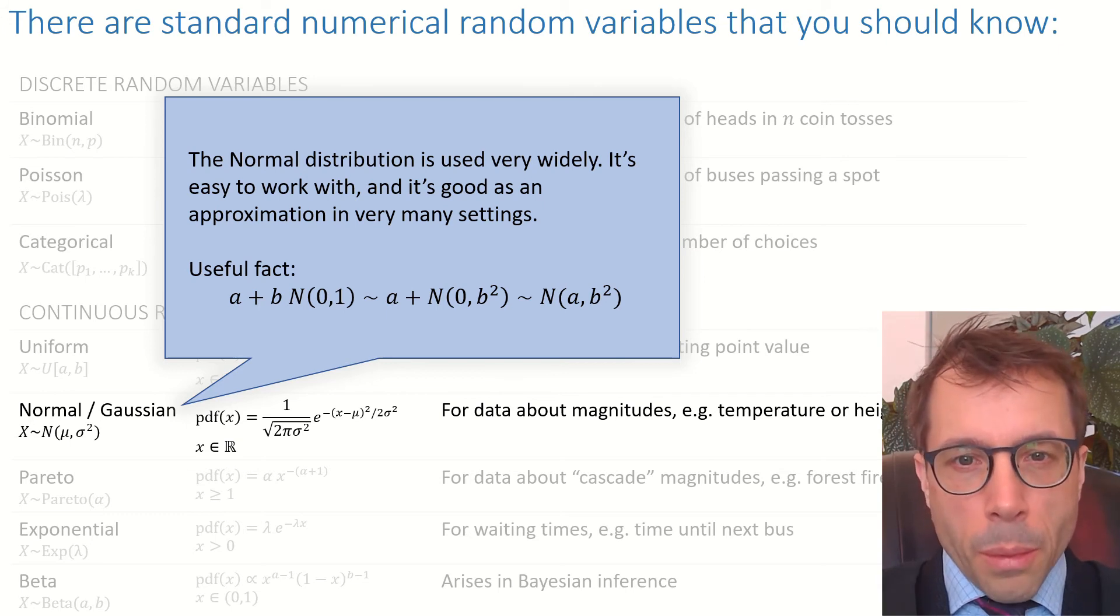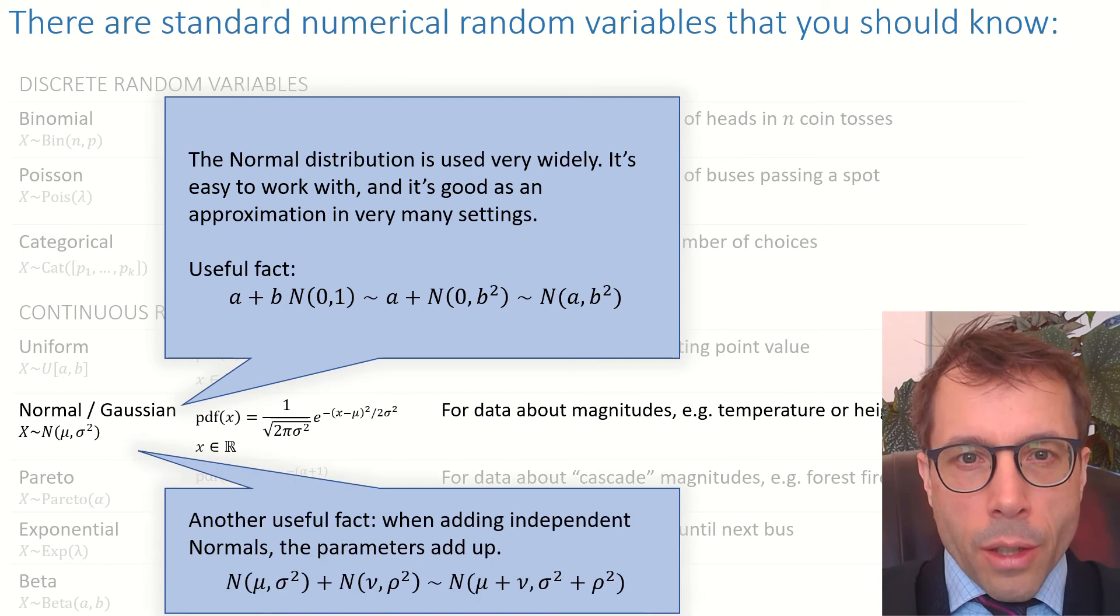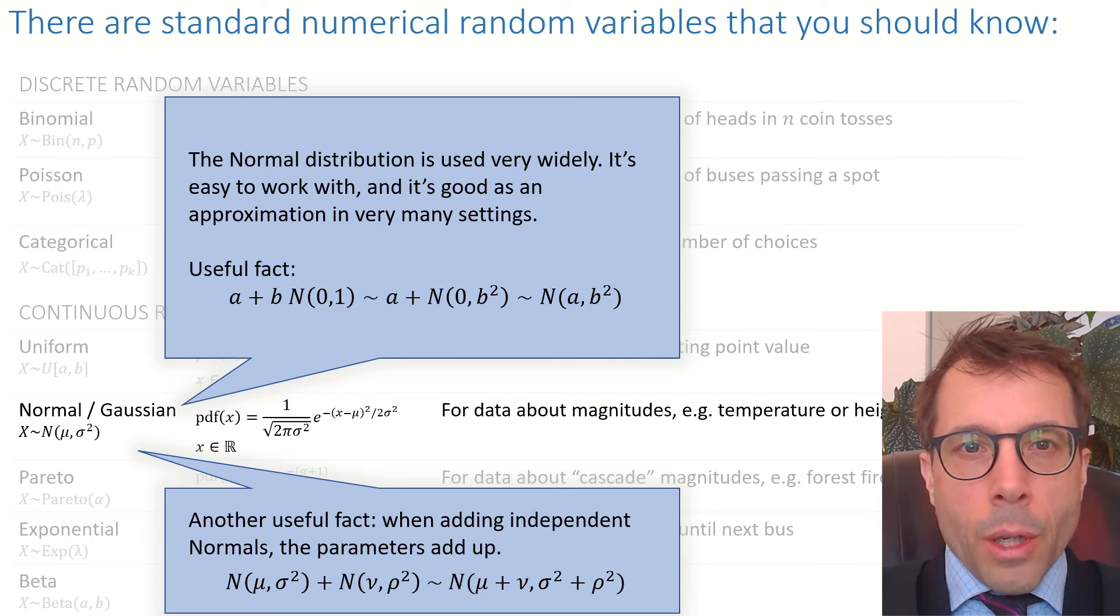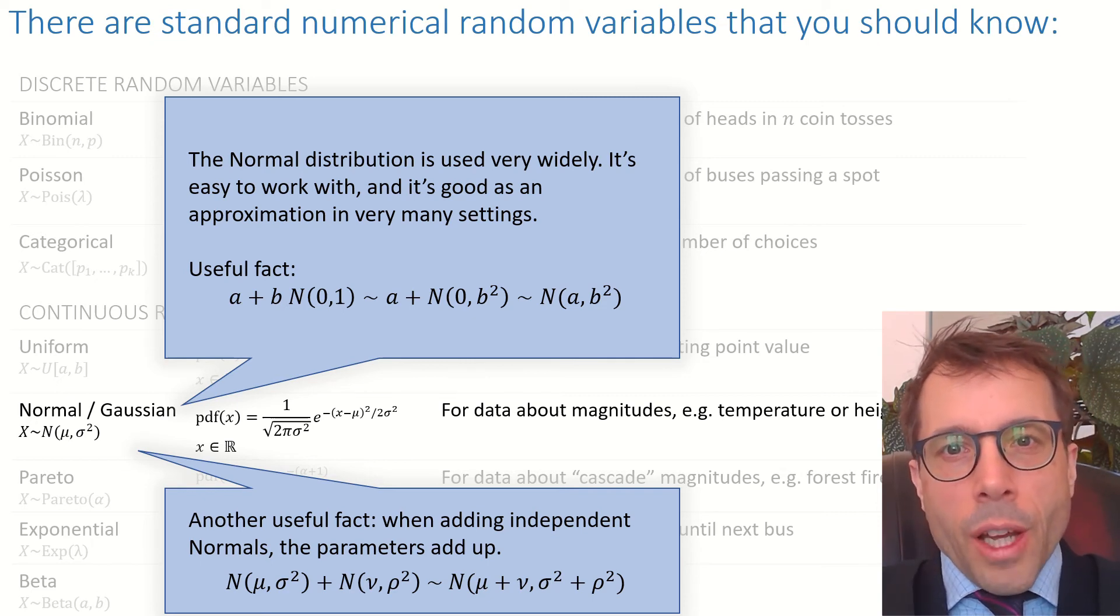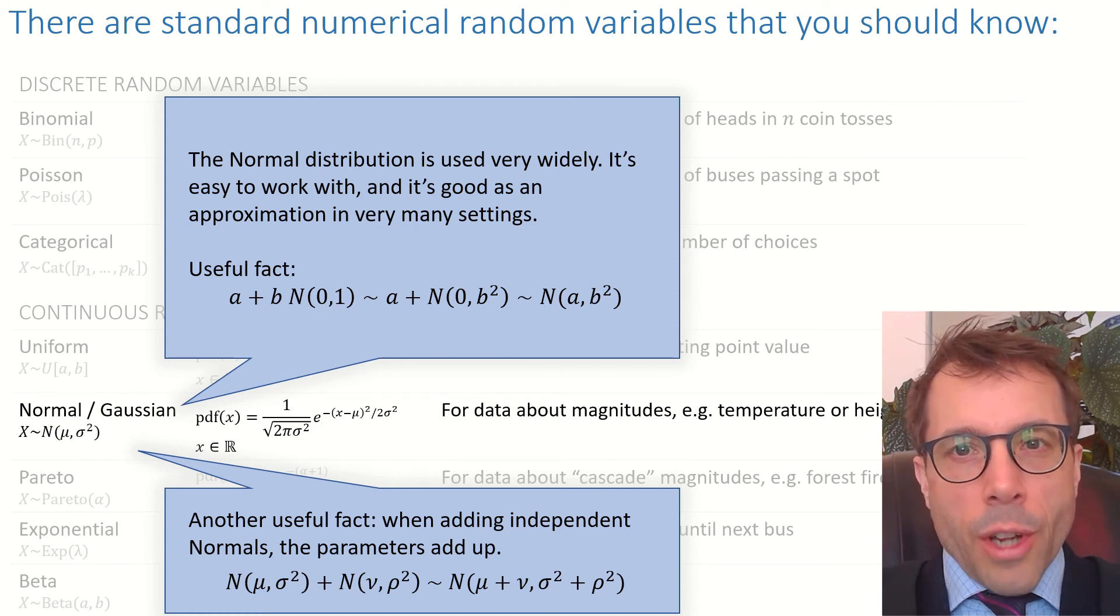One more handy fact: if you add together two independent Normal random variables, the parameters just add up, which also makes working with them really easy. Again, this doesn't usually happen—if you take two independent Binomials and add them up, what you end up with won't be a Binomial.